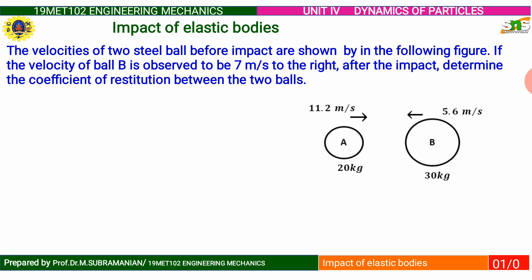The velocity of the steel balls before impact are shown in the following figure. If the velocity of ball B is observed to be 7 meters per second to the right after the impact, determine the coefficient of restitution between the two balls.